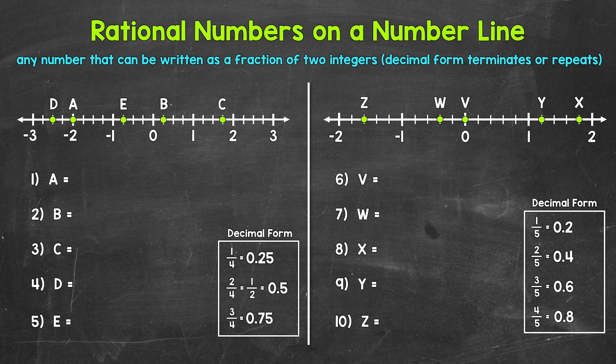The lowest value shown is negative three and the highest is positive three. In between each number, the number line is split into four sections — fourths. So going right from zero: one fourth, two fourths (which is one half), three fourths, one, one and one fourth, one and a half, one and three fourths, two, and so on. Going left: negative one fourth, negative one half, negative three fourths, negative one, and so on.